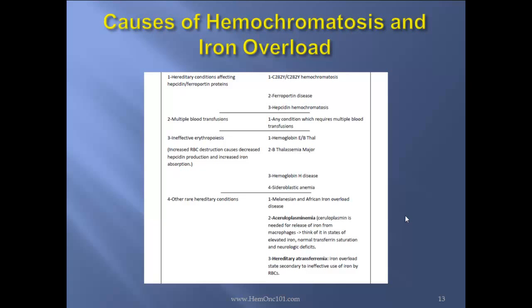Other rare conditions include neonatal and African iron overload states, and aceruloplasminemia. Ceruloplasmin is needed for the release of iron from macrophages, so think of it in states of elevated iron, normal transferrin saturation, and neurologic deficits. And lastly, hereditary atransferrinemia — an iron overload state secondary to ineffective use of iron by RBCs.